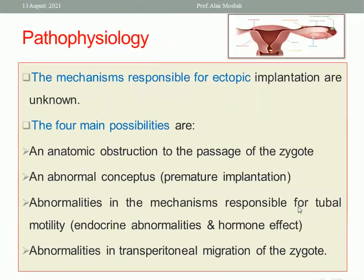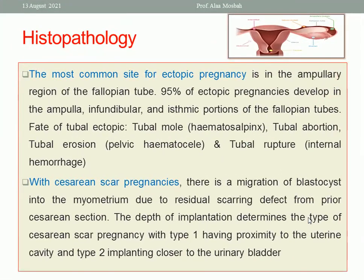Regarding pathophysiology, the exact mechanism why implantation occurs outside the uterine cavity is unknown. There are four main possibilities: anatomic obstruction to the passage of the zygote through the tube; abnormal conceptions with premature implantation; abnormalities in mechanisms responsible for tubal motility, possibly related to hormonal or endocrine abnormalities; or abnormal transperitoneal migration of the zygote.